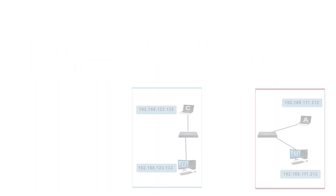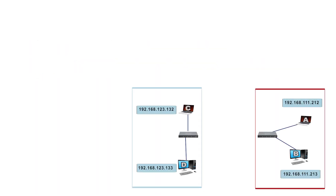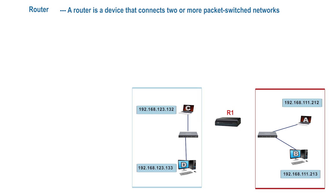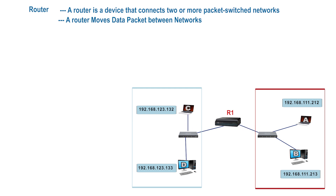Now, to connect these two networks, we will need a device called a router. A router is a device that connects two or more packet-switched networks. A router moves data packets between two or more networks, and this router will be responsible for moving data packets between these two different networks.